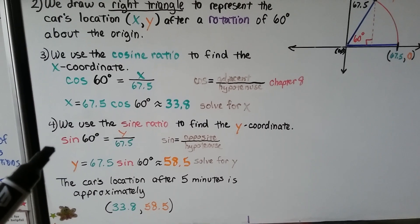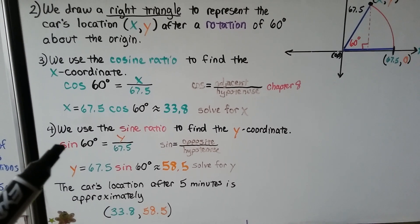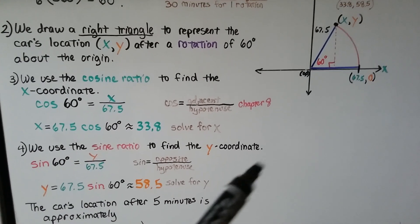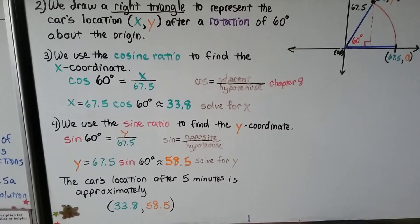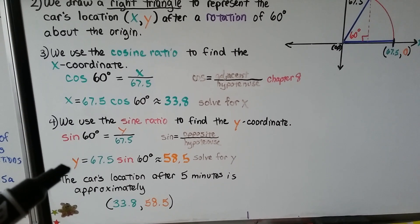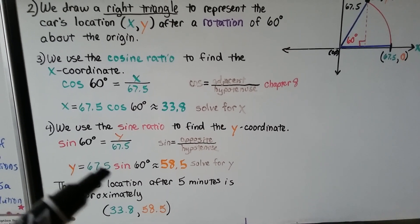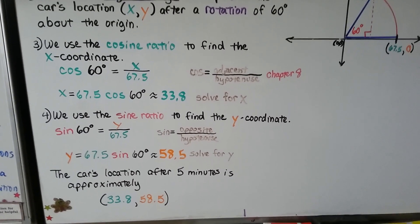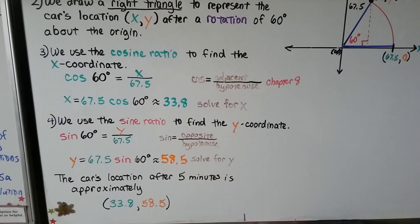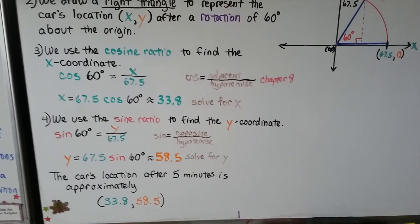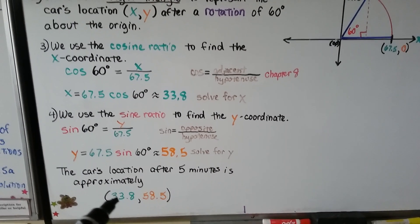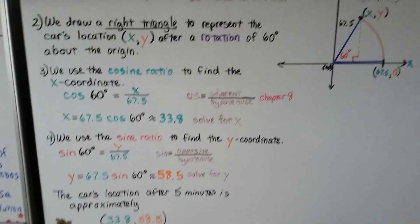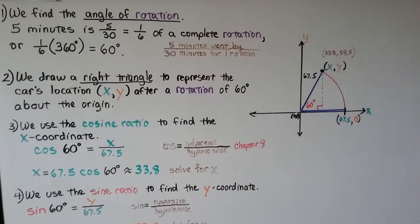Then we use the sine ratio to find the y coordinate. And the sine of 60 degrees would be y over 67.5. That would be the opposite over the hypotenuse. SOHCAHTOA. So using our calculator, y equals 67.5 sine of 60 degrees is approximately 58.5. We're solving for y. So the car's location after five minutes, after a one-sixth turn, is approximately 33.8 for x and 58.5 for y. So we found the location.